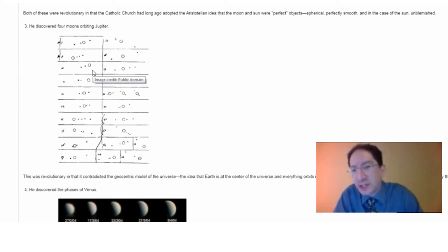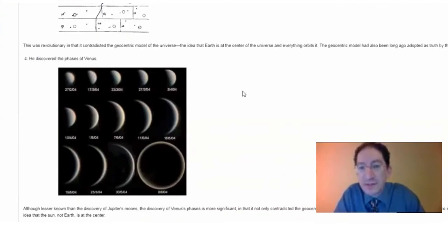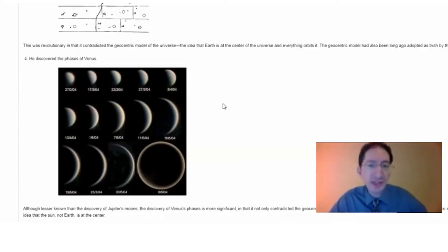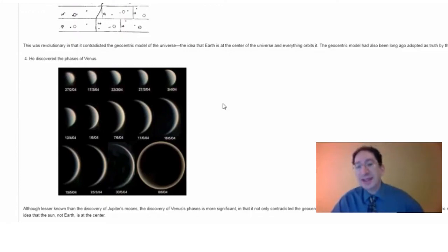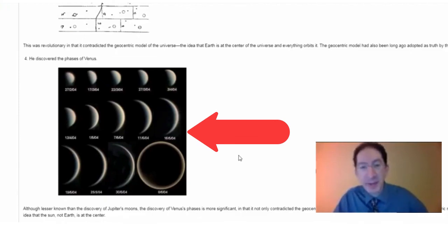The moons of Jupiter contradict the geocentric model, but it's not really a strong test of the heliocentric model. You get that with the phases of Venus, which is lesser known but more important. This is a very direct, detailed, quantitative test of the geocentric and heliocentric models. Each of these models makes very different predictions for what phases Venus will go through and its angular diameter — how big it appears — as it goes through its orbit. Here you can see the data: the full range of phases and angular diameters that Venus goes through.